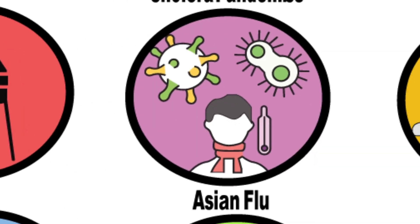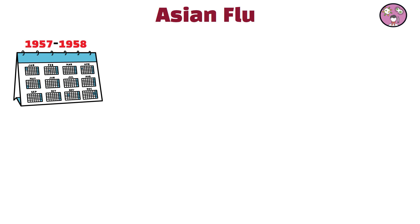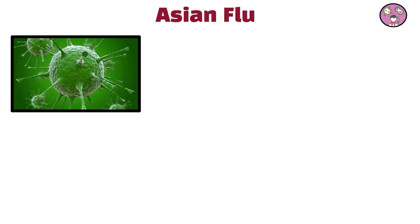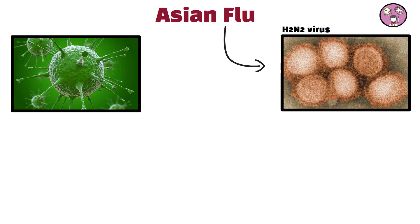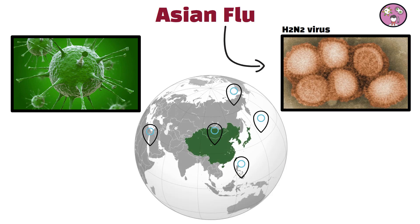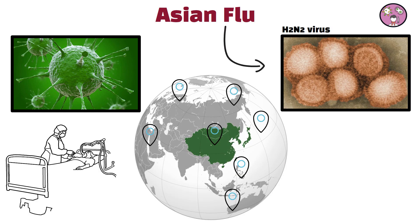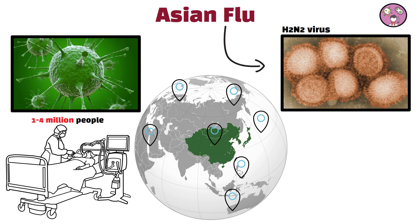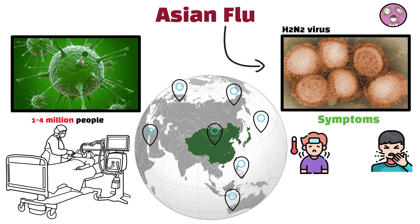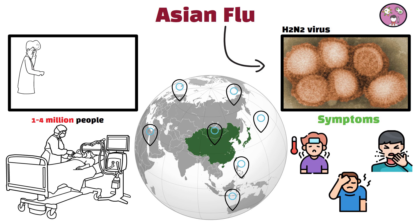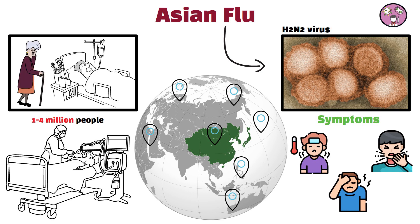Asian flu, 1957 to 1958. The Asian flu was an influenza pandemic caused by the H2N2 virus, which emerged in East Asia and quickly spread worldwide. It infected an estimated 1.4 million people, causing symptoms such as high fever, cough, and severe fatigue. The elderly and those with underlying health conditions were particularly vulnerable. The rapid development of a vaccine helped control the spread of the virus.